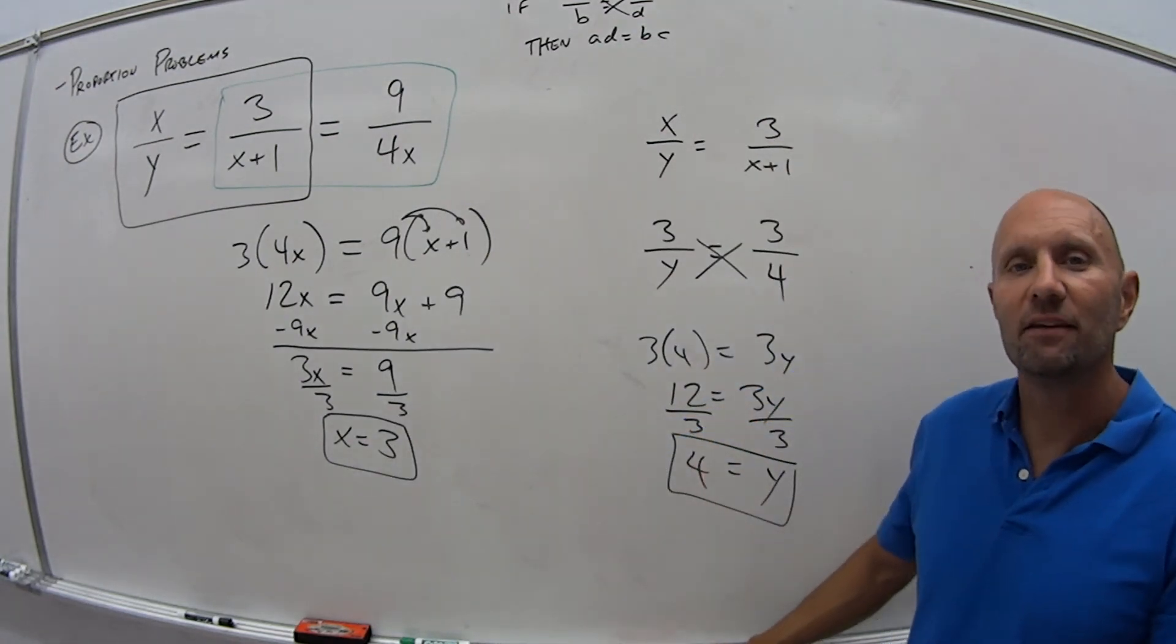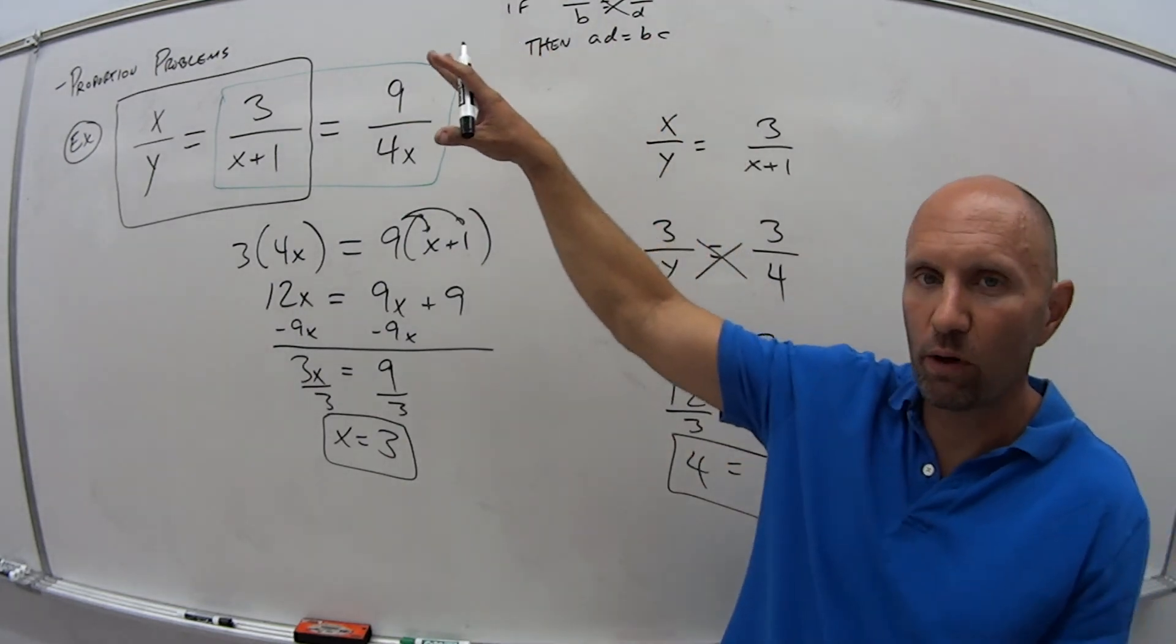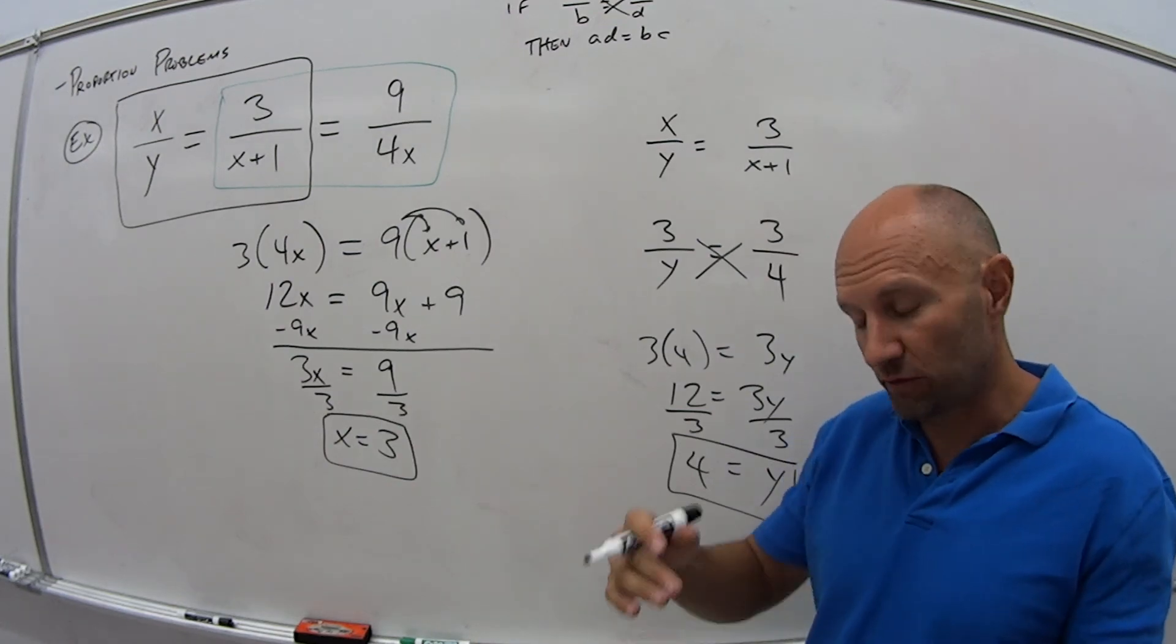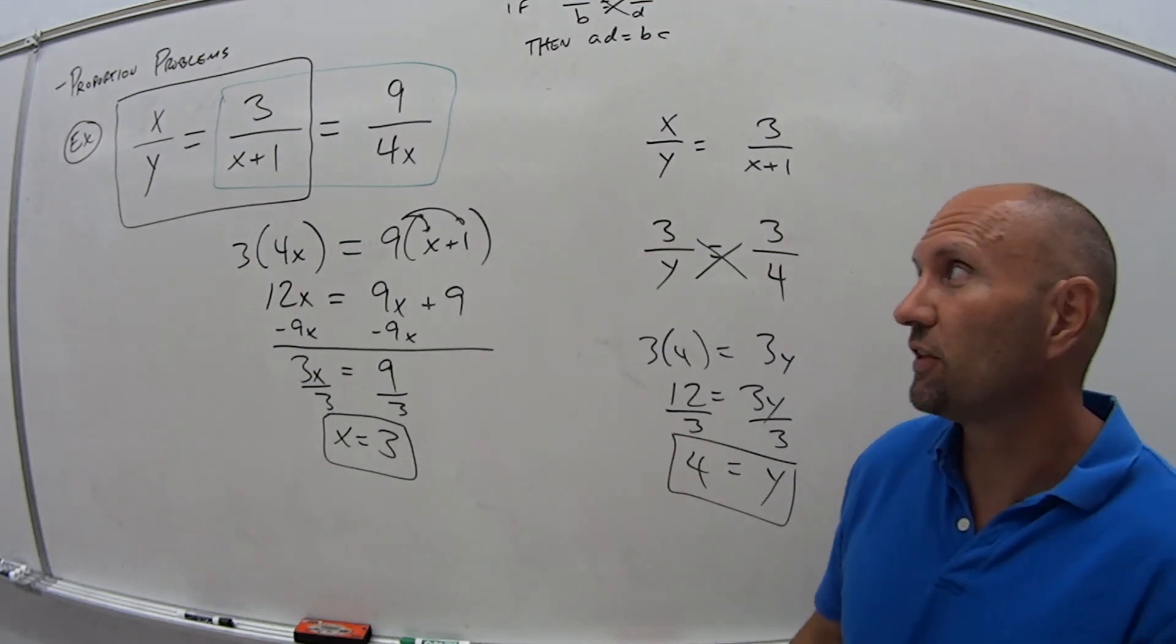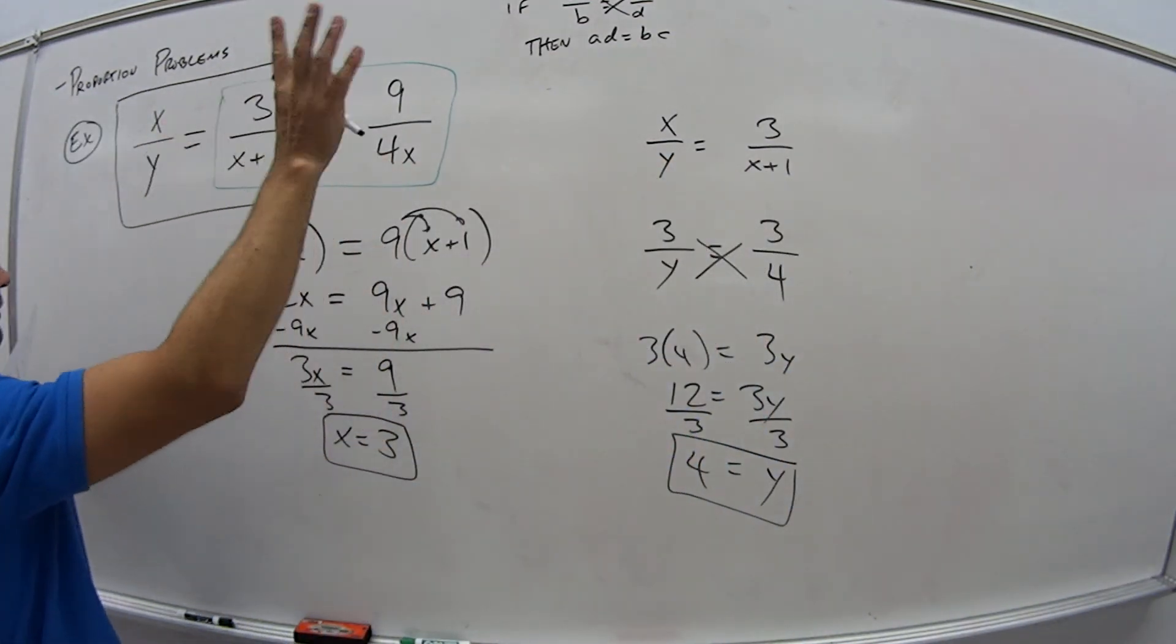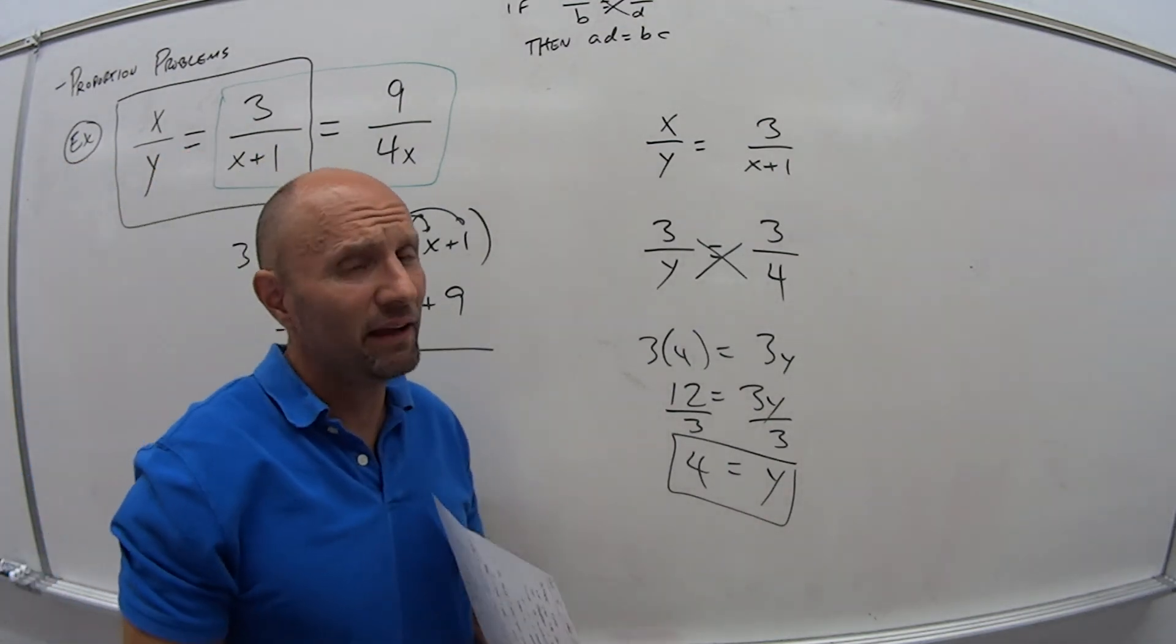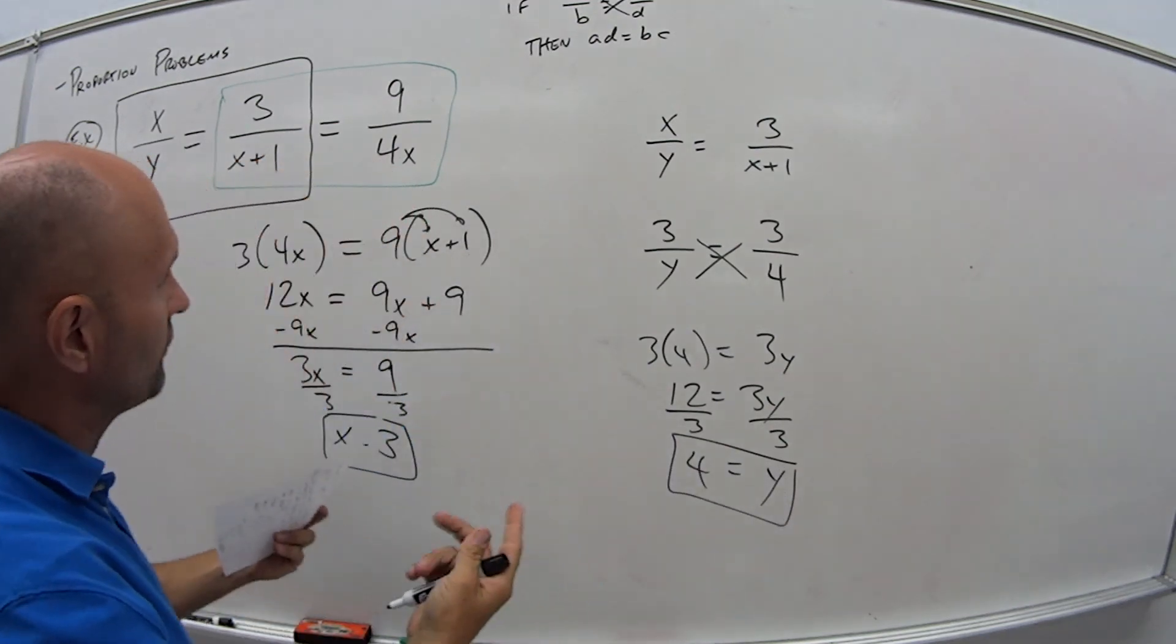And that's it. That is how every single one of these proportion problems is going to be solved. So you don't have to reinvent the wheel. You don't have to sit there thinking how am I going to solve this one now. This is the steps. Pick out the two pieces. First of all, you know because you have two equal signs. I don't think we're going to do anything else this semester that's going to have two equal signs, just these kind of problems.